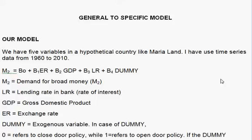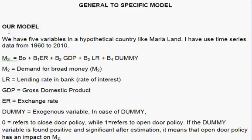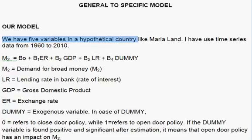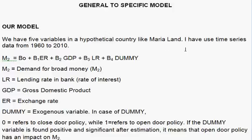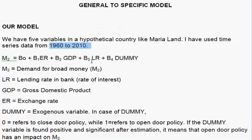Today we shall be developing a general-to-specific model. We have five variables in a hypothetical country like Marialand, using time series data from 1960 to 2010.